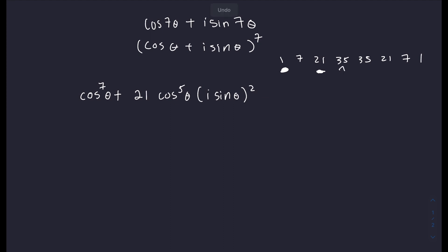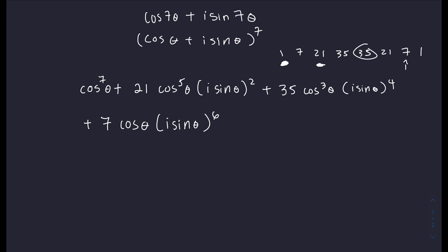We do not want this 35 here, but we want the 35 here. Let's use that to get our next term. That will be plus 35 cosine to the third theta, times i sine theta to the fourth. As you can see, we are only taking the even powers of i sine theta, because that would make the term real. Our next term, we don't want this 21, but we want the 7 right here. We're going to add 7 cosine theta, times i sine theta to the sixth. These are all the terms we're going to need. This is why we are skipping the terms that we don't want.